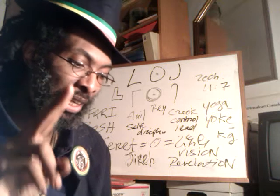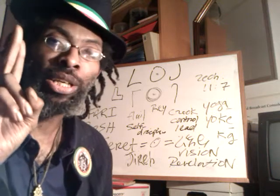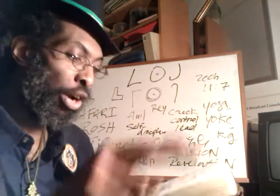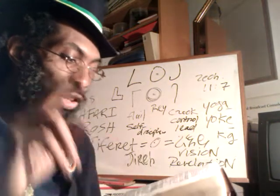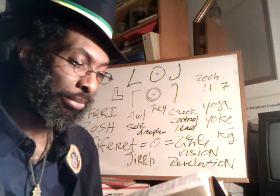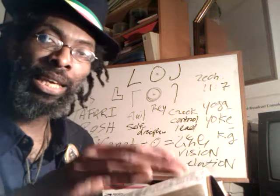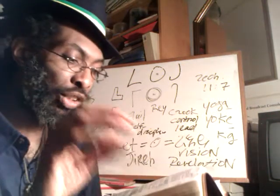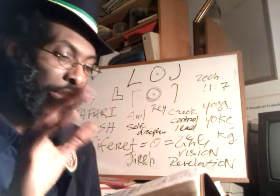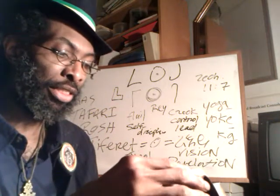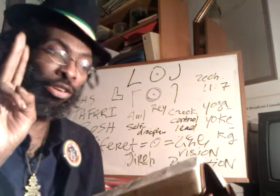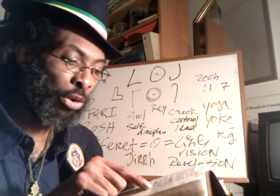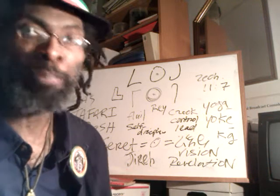The second verse says, 'Take my yoke upon you and learn of me, for I am meek and lowly in heart, and ye shall find rest for your souls.' Then the third verse reads, 'For my yoke is easy and my burden is light.'